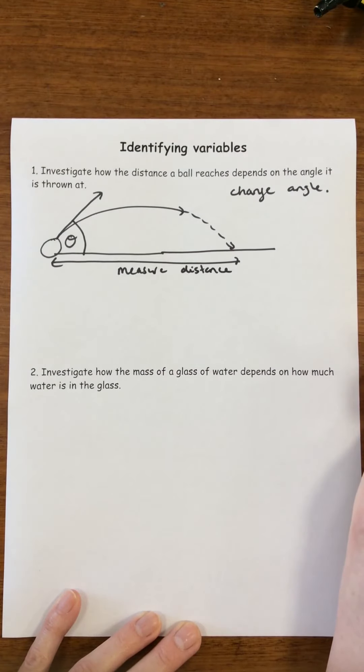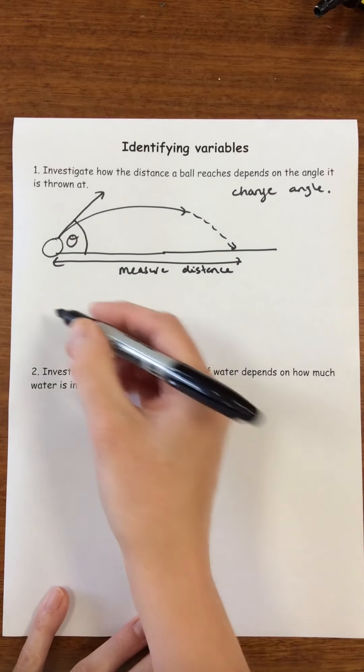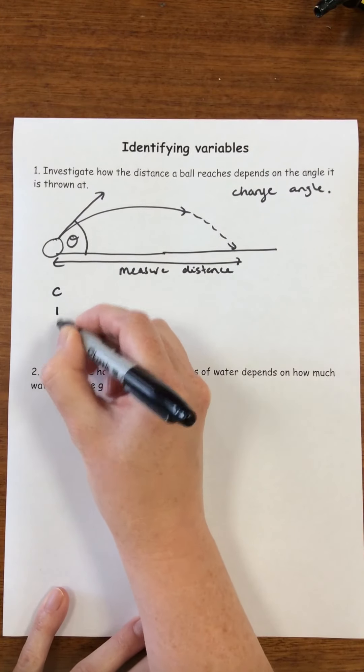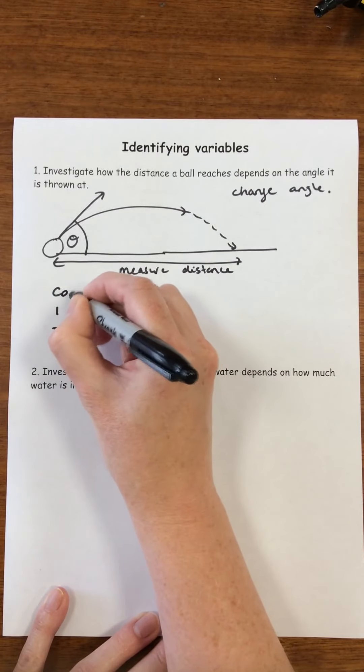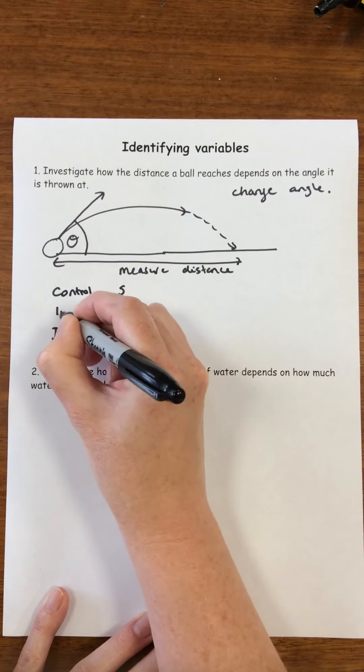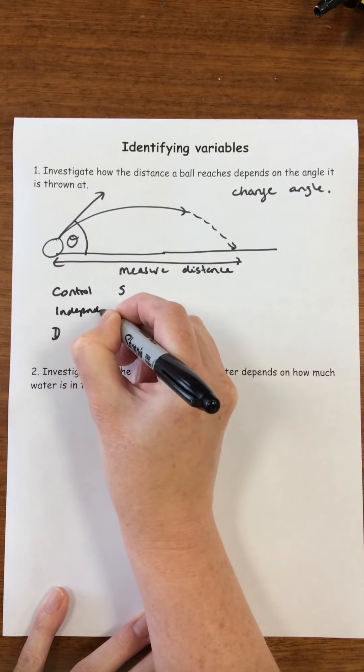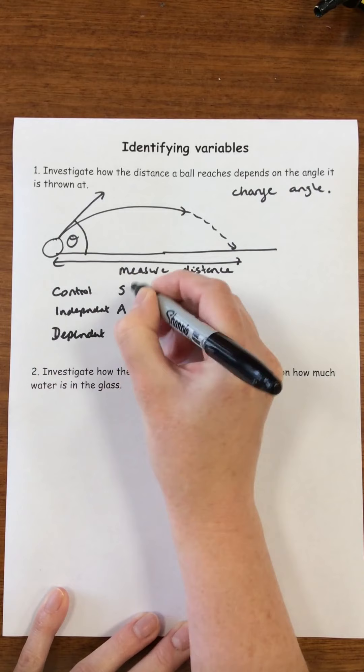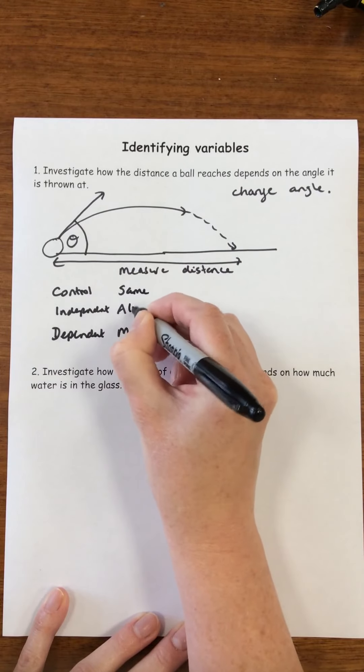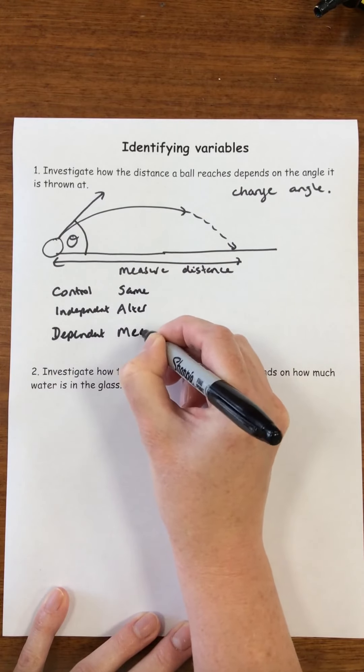Let's think before we go any further about our Sid and Sam. We'll write down Sid over here and Sam beside it. The C stands for control, I for independent, D for dependent, and then we've got same, alter, and measure.